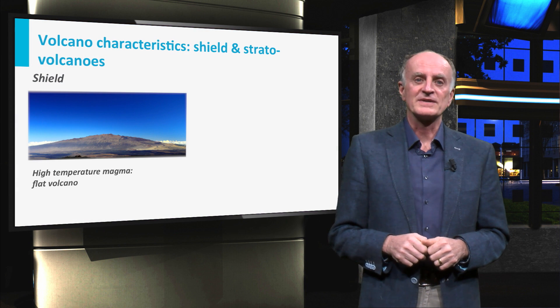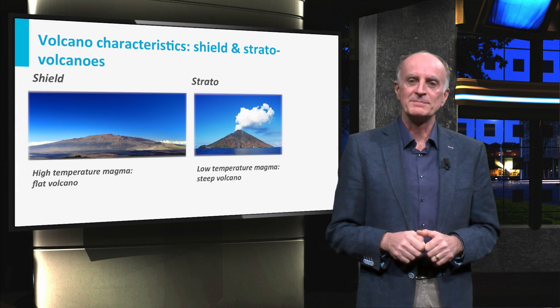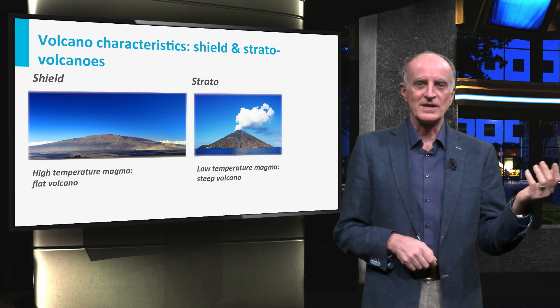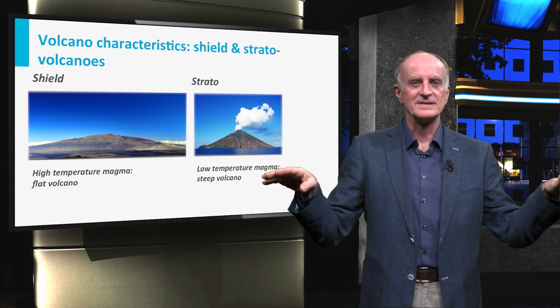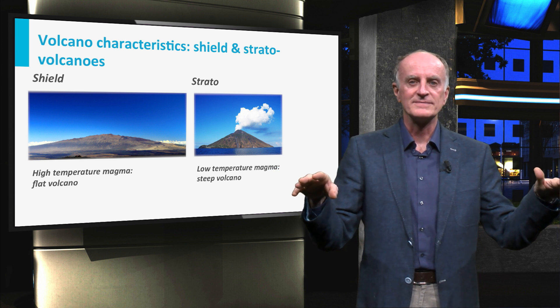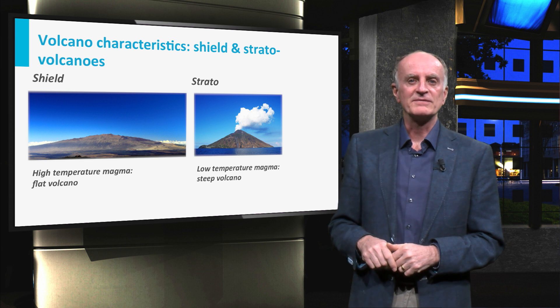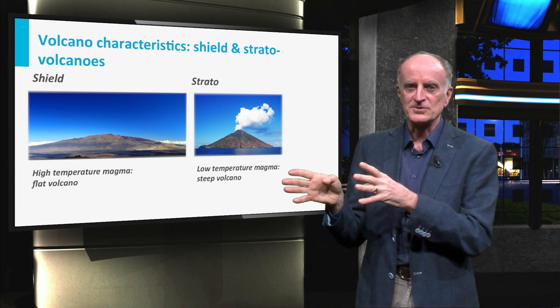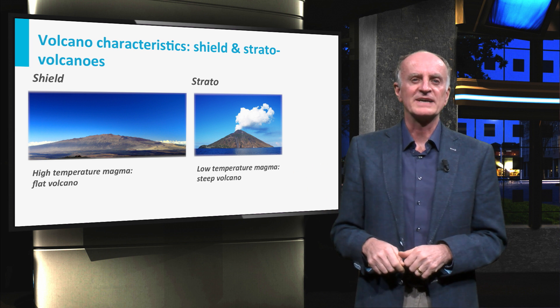Volcanoes show very different characteristics and behavior depending on the magma. High-temperature magmas produce large but flat edifices. The lava flows gently and regularly out of the crater. Low-temperature magmas, on the contrary, form steep and more irregular complexes and are much more dangerous with frequent explosive activity.